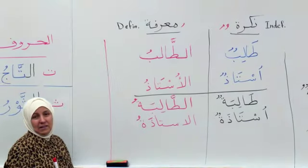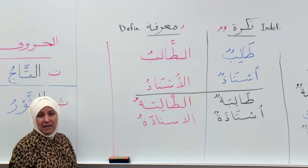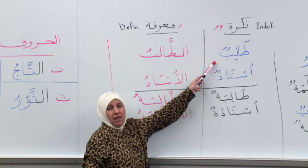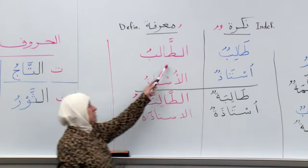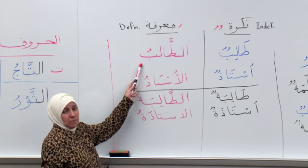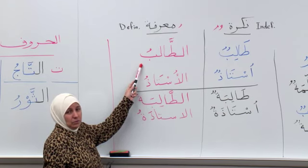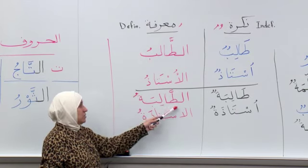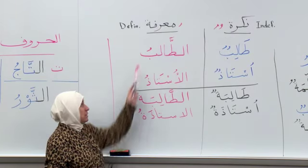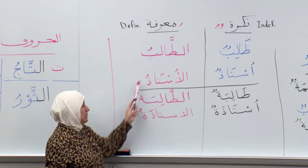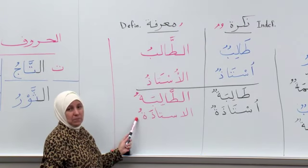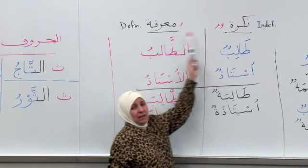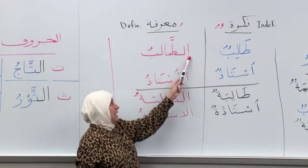So نكرة: طالبٌ, a student. معرفة: الطالبُ, the student. الأستاذُ, الطالبةُ. For the معرفة, you have the O sound — only one dhamma. That's the difference between the indefinite noun and the definite noun — you add the alif and lam.